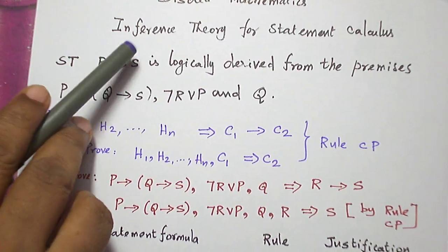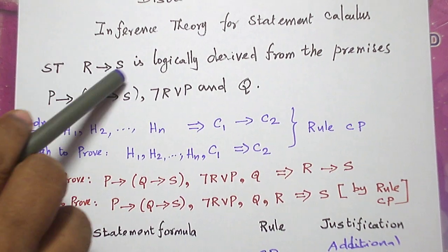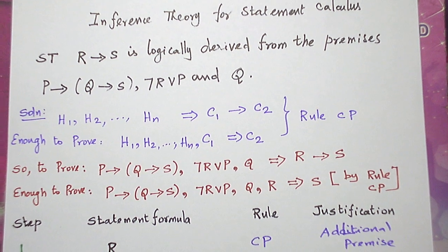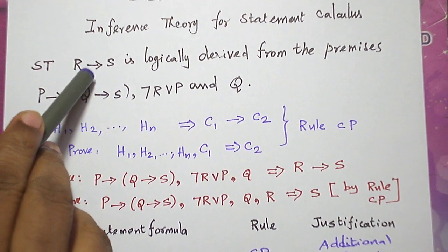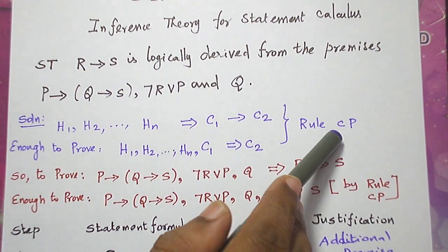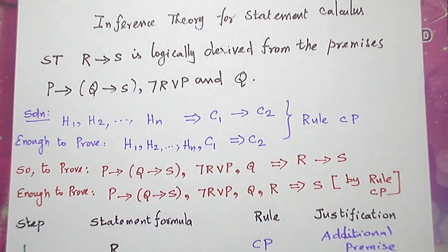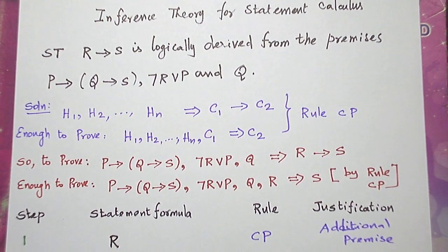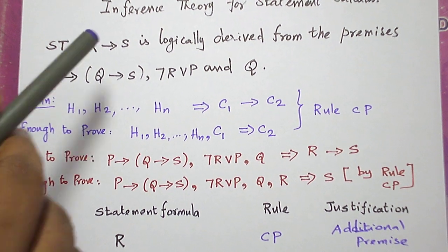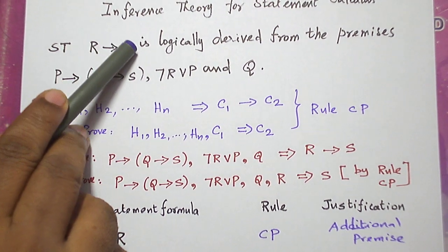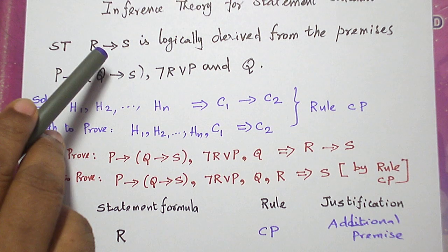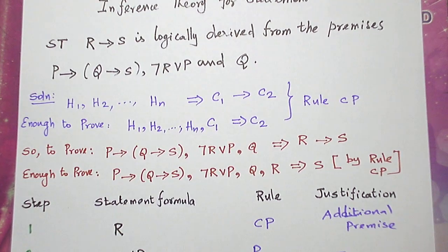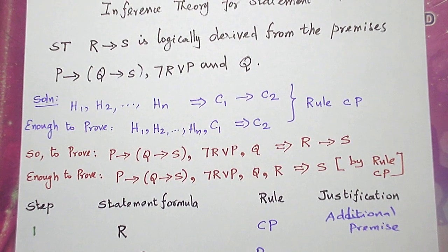Now look at the conclusion. The conclusion statement formula contains a conditional connective. When it contains a conditional connective we can use rule CP — the conditional proof technique. When the conclusion itself contains a conditional connective, we shall use rule CP.